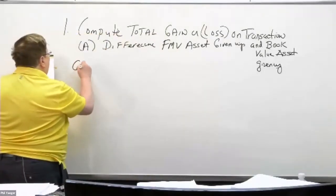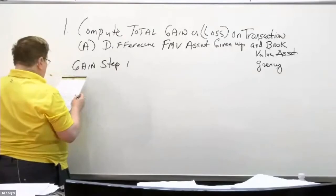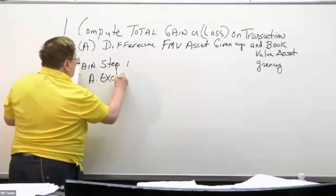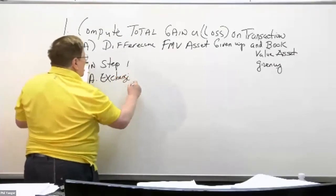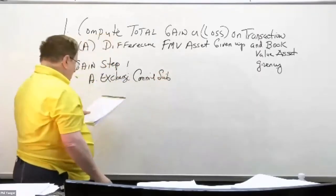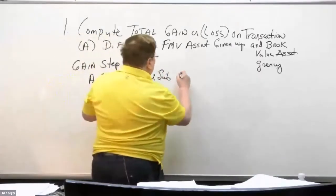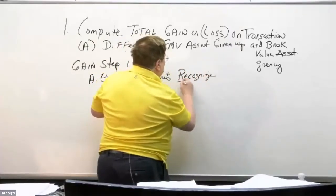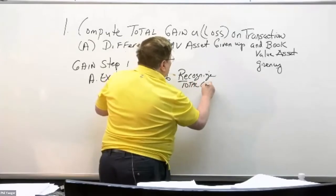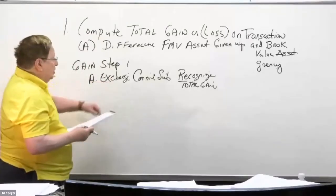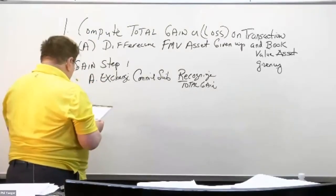Now, if there is a gain from step one, and the exchange has commercial substance, what you're going to do is recognize the total gain. So if the exchange has commercial substance, you recognize the entire gain.